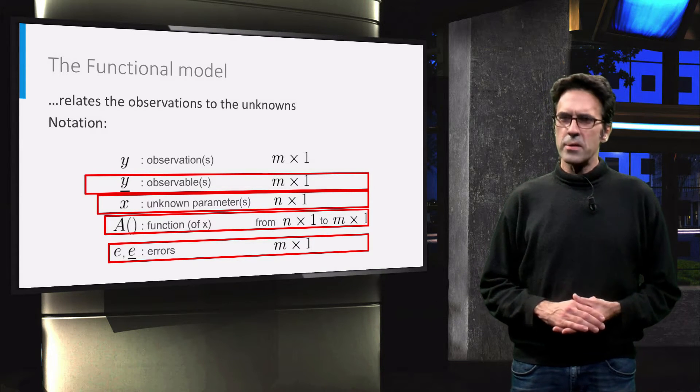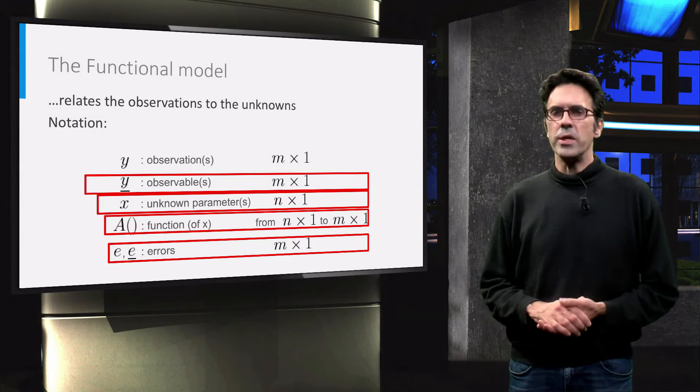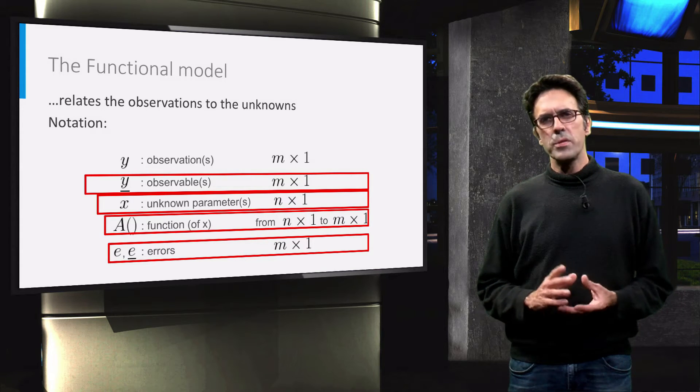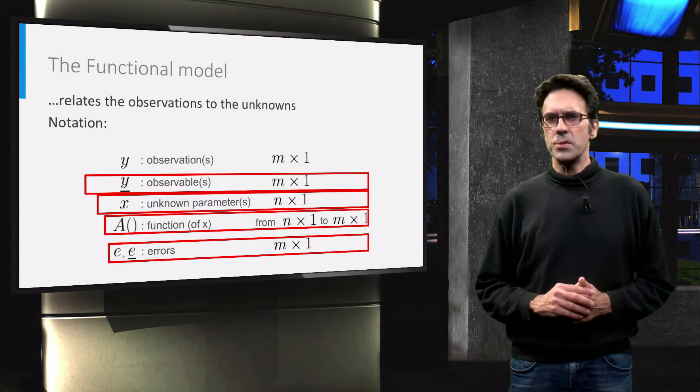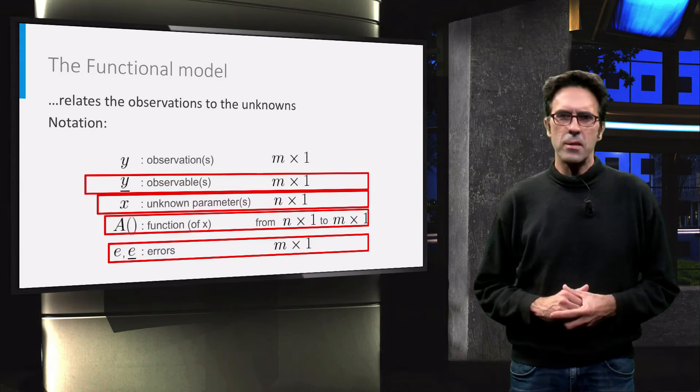We will now connect them together in the model of observation equations. I will do this first in an abstract sense, in which we have three observables and two unknowns connected via a linear model.